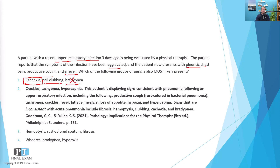Looking at other incorrect answers: hemoptysis, or a bloody cough, would be more likely in the case of a tumor or pulmonary embolism — something involving acute trauma to the lung. Rust-colored sputum is possible in bacterial pneumonia, so that part would be correct. However, fibrosis is unlikely at this time — fibrosis would be more of a long-term result of severe pneumonia, and we're simply not to that point yet.